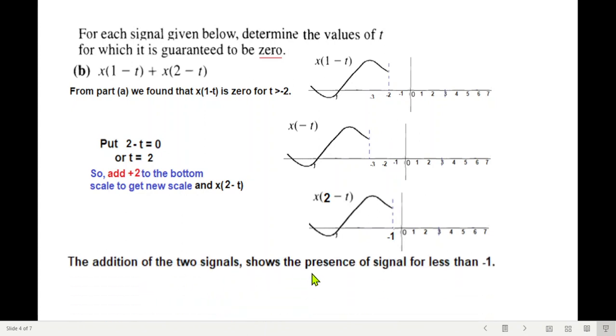So our result will be, addition of the two signals shows the presence of signal for less than negative 1, and therefore this signal will be 0 for t greater than minus 1, and the solution manual answer is given greater than minus 2, which is wrong.